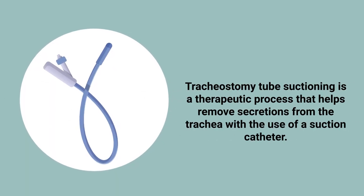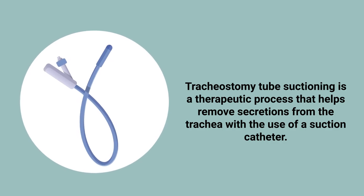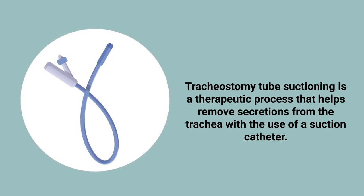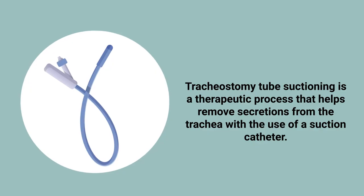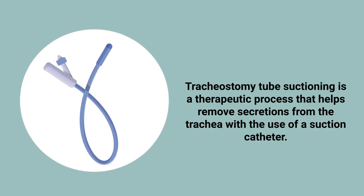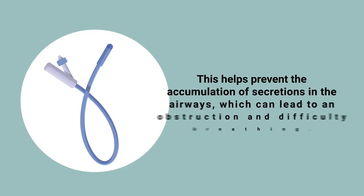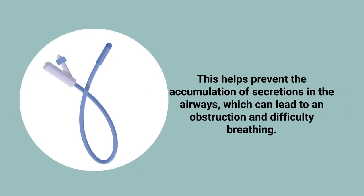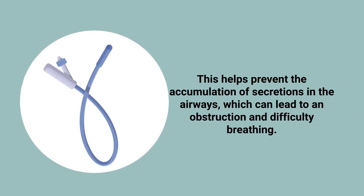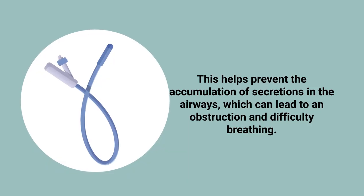Tracheostomy tube suctioning is a therapeutic process that helps remove secretions from the trachea with the use of a suction catheter. This helps prevent the accumulation of secretions in the airways, which can lead to an obstruction and difficulty breathing.